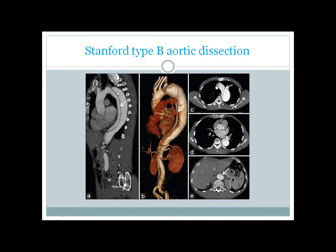Here you can see the intimal flap creating a false lumen, and it's a long one — from the starting point of the descending aorta up to the level of the diaphragm this flap continues. You can also see this area indicated by the arrow showing the aortic dissection, and in horizontal sections you can see the flap in the descending aorta and also in the lower sections. Contrast CT scans are a very useful tool in diagnosing both Stanford type A and type B aortic dissections.